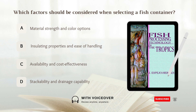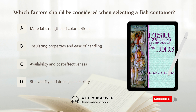Episode 9. Which factors should be considered when selecting a fish container? Answer: B. Insulating properties and ease of handling.